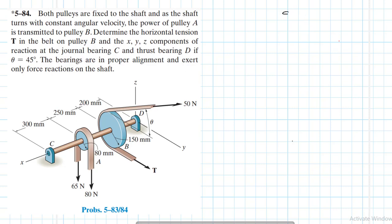This problem comes from the Engineering Mechanics textbook, 13th edition by RC Hibbeler. We have a system of pulleys fixed to the shaft, and pulley A transmits power to pulley B. We need to find the tension T in the belt over pulley B and the X, Y, Z components of the reactions at the journal bearing C and thrust bearing D.